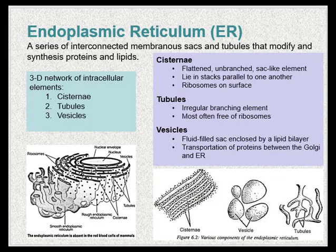The endoplasmic reticulum, or ER, is a series of interconnected membranous sacs and tubules that collectively modify proteins and synthesize lipids. They are composed of a 3D network of intracellular elements called cisternae, tubules, and vesicles. Cisternae are flattened, unbranched sac-like portions of the ER that lay in stacks parallel to one another and have ribosomes on the surface. Tubules are irregular branching elements of the ER that generally do not have ribosomes. Vesicles are fluid-filled sacs enclosed by a lipid bilayer, responsible for transporting proteins between the Golgi and the ER.